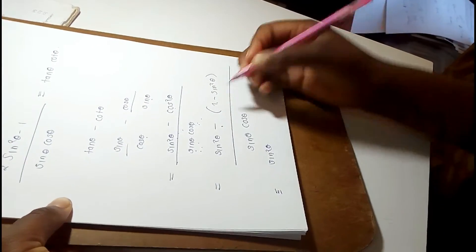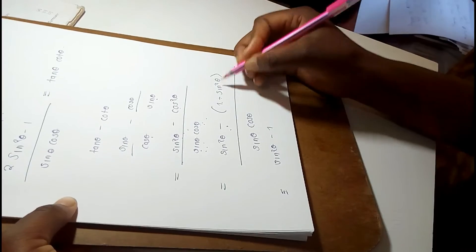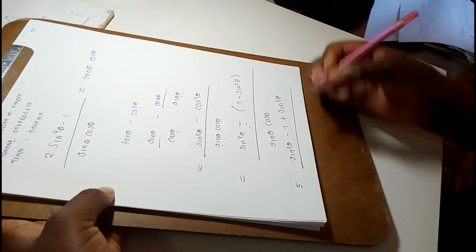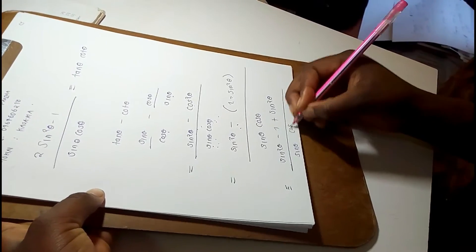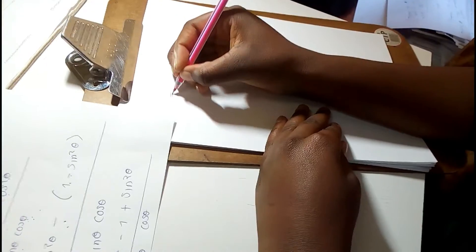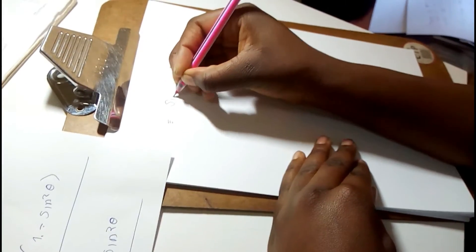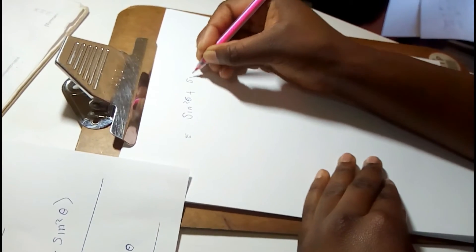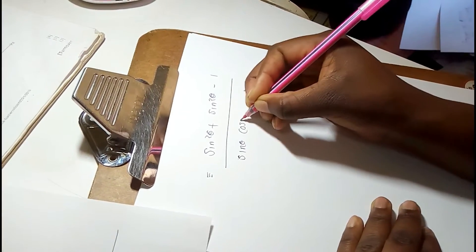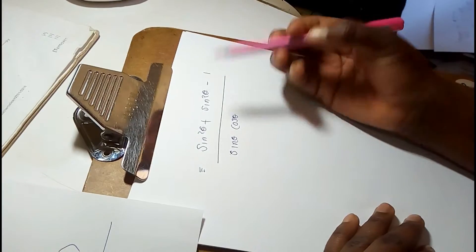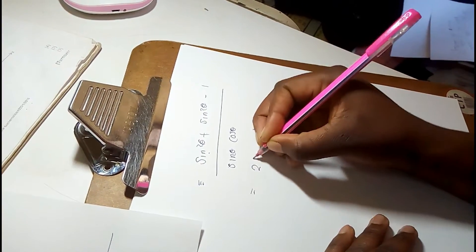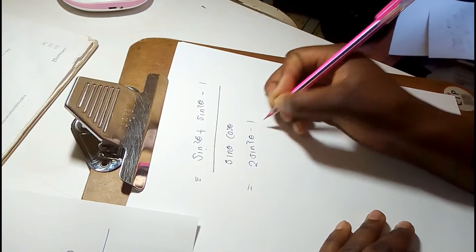Expanding the numerator: negative multiplied by 1 gives negative 1, and negative multiplied by negative sine squared theta gives positive sine squared theta. So the numerator becomes sine squared theta plus sine squared theta minus 1, all over sine theta cos theta. Collecting like terms: sine squared theta plus sine squared theta equals two sine squared theta, giving us two sine squared theta minus one, over sine theta cos theta.